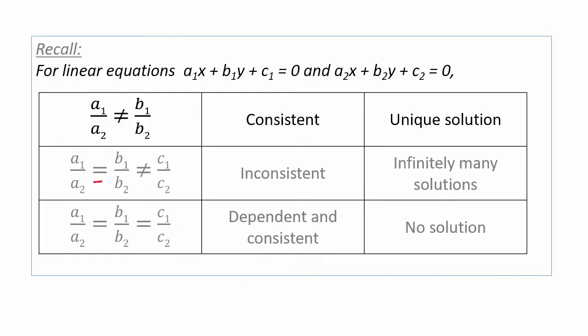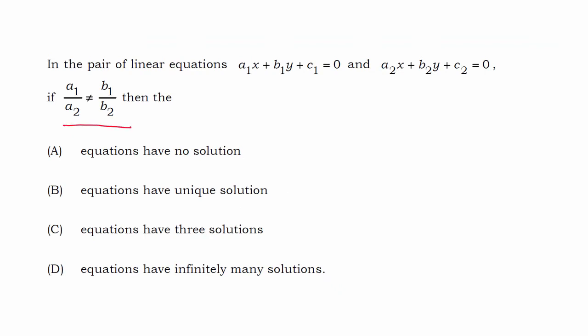Scenario 1 is when a1 by a2 is not equal to b1 by b2. Because a1 by a2 is not equal to b1 by b2, the equations have a unique solution.